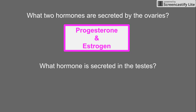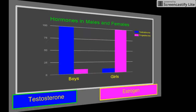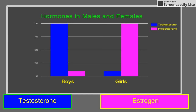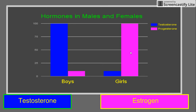What hormone is secreted by the testes? Testosterone. Now let's take a closer look at the hormones in males and females. Testosterone is the male hormone, found in boys, though they do have a tiny bit of estrogen and progesterone. Estrogen and progesterone are the female hormones; however, girls do have a tiny bit of testosterone.